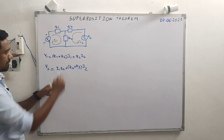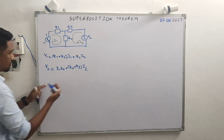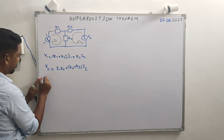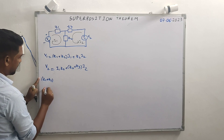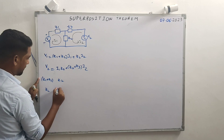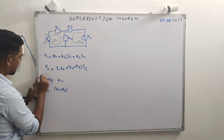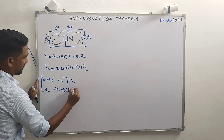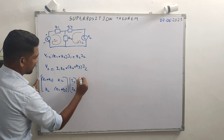According to Kirchhoff's Voltage Law using mesh analysis, represent these equations in matrix form: the matrix is [Z1+Z2, Z2; Z2, Z2+Z3] times [i1; i2] equals [V1; V2].